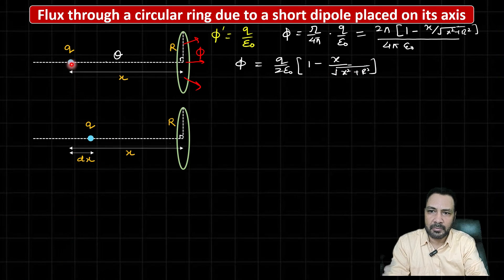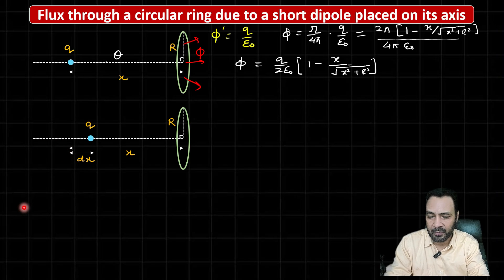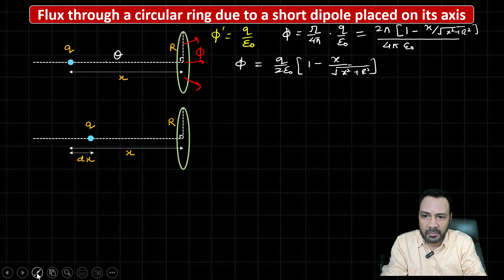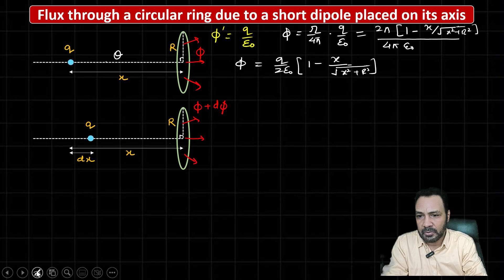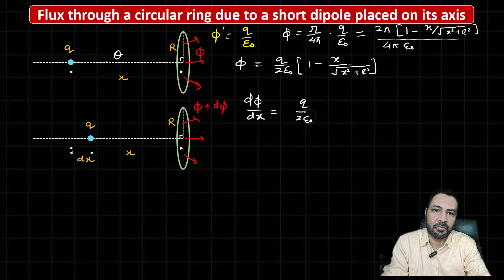Now I displace this point charge towards the ring by an amount dx. From the calculus point of view, since the change in x must be in the increasing direction of x, the displacement is actually −dx — I will take care of that minus sign. Because q is coming closer to the ring, the field lines become denser, so the flux through the ring should increase slightly. The new flux becomes φ + dφ. Taking the differentiation of φ with respect to x, I write dφ/dx, differentiating q/2ε₀ · [1 − x/√(x²+r²)].